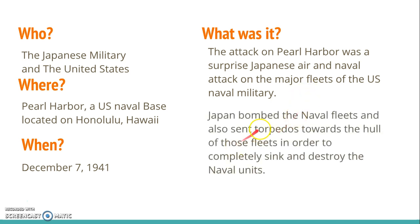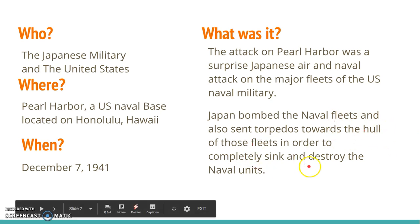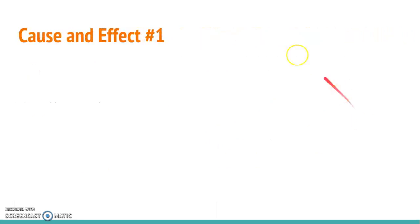How did it happen? Japanese airplanes bombed the naval fleets and also sent torpedoes towards the hull, which in the end sunk the ships and destroyed them completely. Now I'm going to move on to the causes and effects — what caused the actual attack and the effects after.